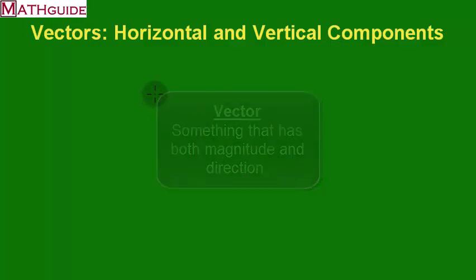Now, if someone says, hey, I was on the highway and I was going 60 miles an hour, that's not a vector because you only have magnitude there. You don't have a direction.